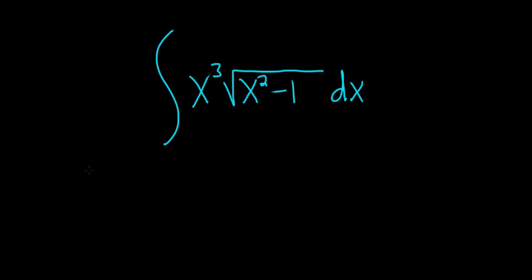Integrate x cubed times the square root of x squared minus 1, solution. So I've never done this problem before, but the natural thing to try first is to let u be equal to x squared minus 1. So let's try that.